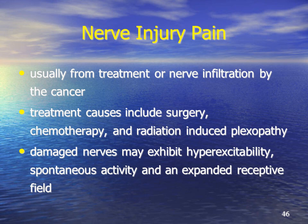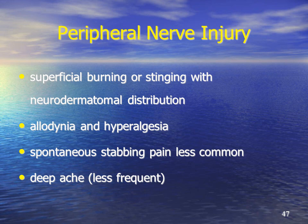Damaged nerves may exhibit hyper-excitability, spontaneous activity, and an expanded receptive field causing significant issues with pain. Peripheral nerve injuries may not necessarily be associated just with malignant disease, but often the pain is burning, stinging, or shooting and is associated with a neurodermatomal distribution. There may be allodynia and hyperalgesia associated with the pain; spontaneous stabbing pain is perhaps less common, as is an aching pain.